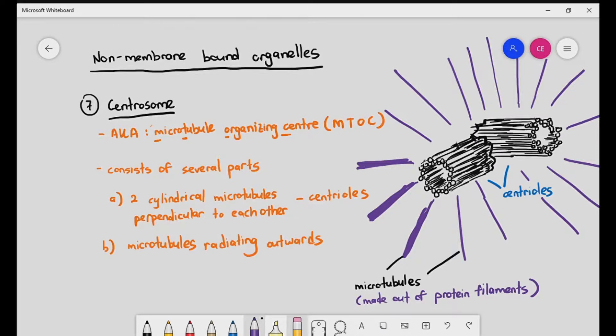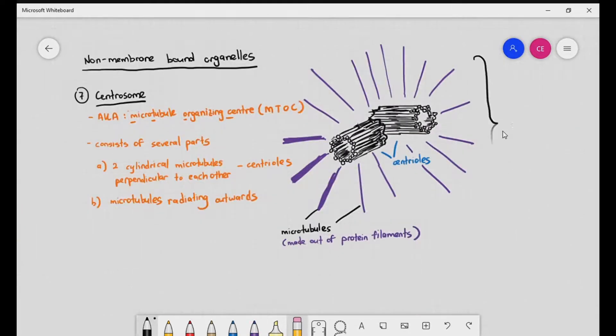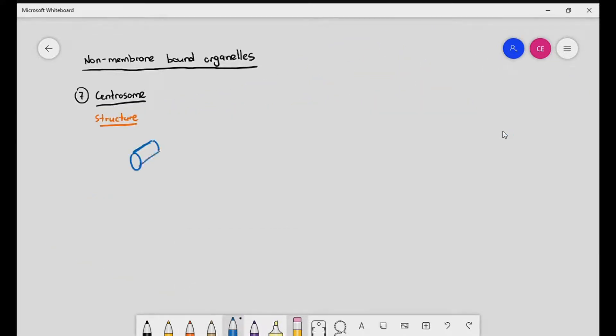After drawing out the centriole, we can see that there are certain tiny filaments radiating outwards from the centriole. Those purple colored things radiating out of the centrioles are referred to as microtubules. Together, the centrioles and the microtubules form the centrosome. The centrosome is usually found beside the nucleus of the animal cell.